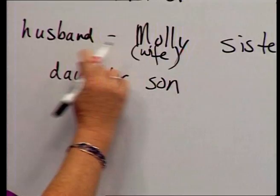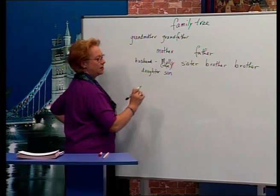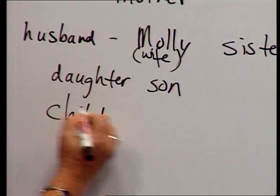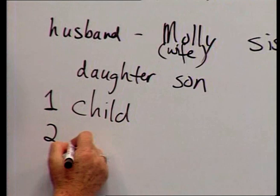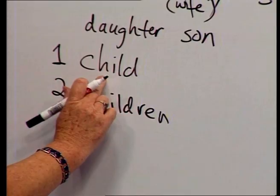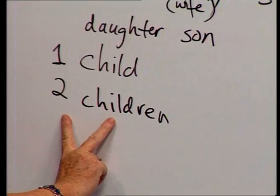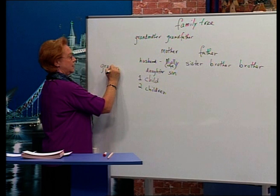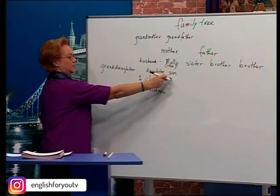Husband, wife. Daughter, son. Who else do we have in this family? We have child — one child, two children. I have two children. My daughter is one child. My son is one child. My daughter and son are two children. My grandmother, my mother, me, my daughter — my children are granddaughter, and my son is grandson.